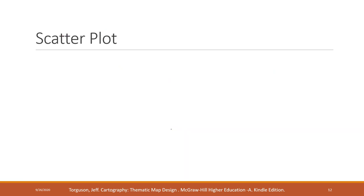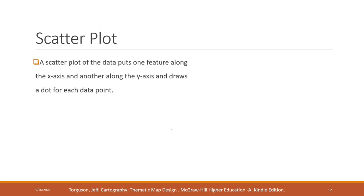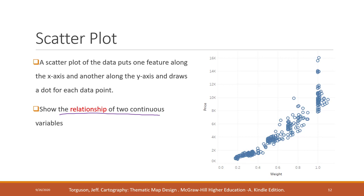The next commonly used visualization is called a scatter plot. A scatter plot is used to show the relationship between two variables. You can either calculate the correlation coefficient or create a scatter plot to show the relationship of two continuous variables. Here we can clearly see a nonlinear strong positive relationship.